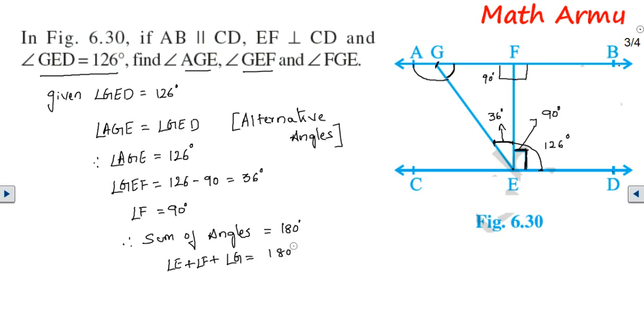Angle E value is 36, write 36 here. Angle F is 90 degrees, so write plus 90. And angle G we do not know, so write angle G equal to 180.